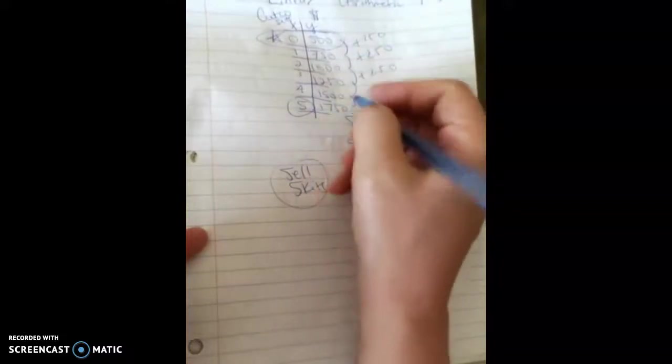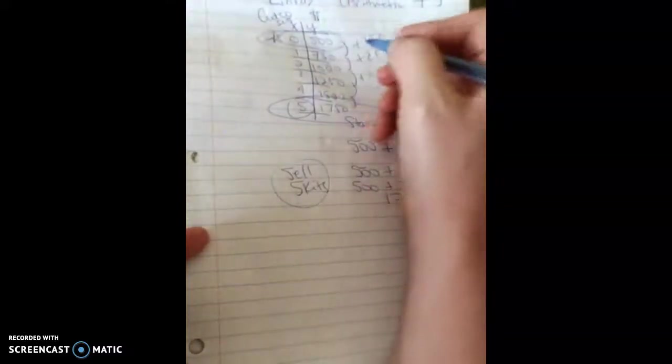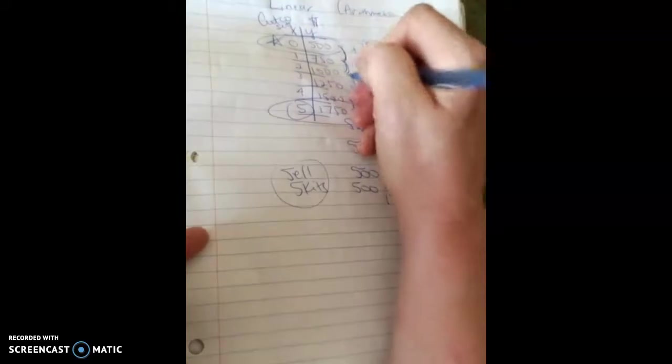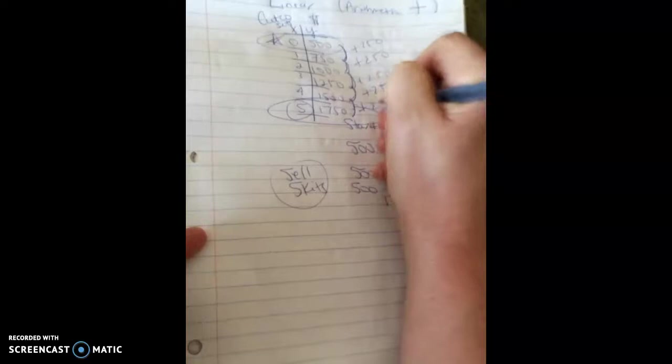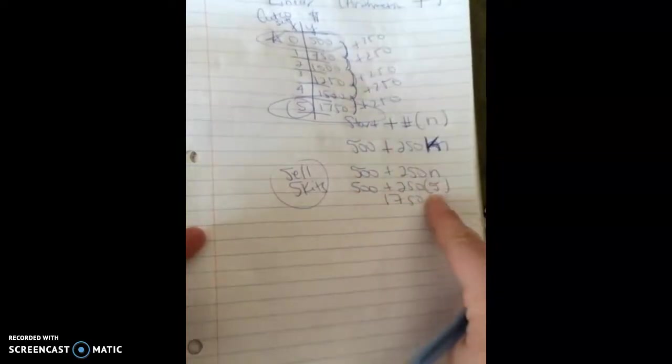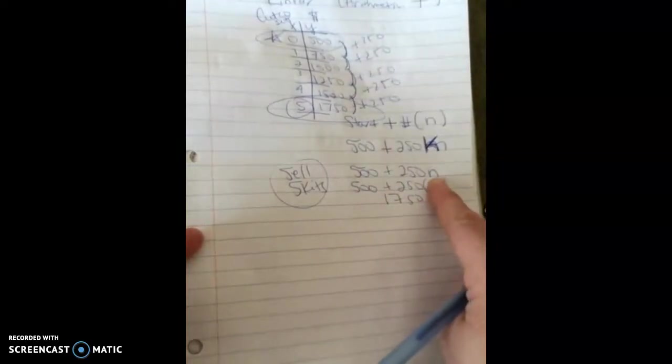And the other thing, notice that if I get to this level, how many times have I added 250? Once, twice, three times, four times, five times. I add 250 five times, which is why in our formula we use five, or just the N. We don't need N minus one.